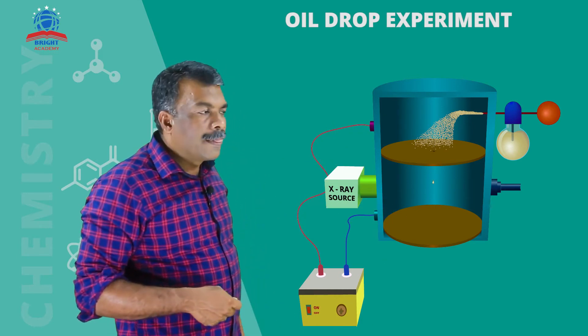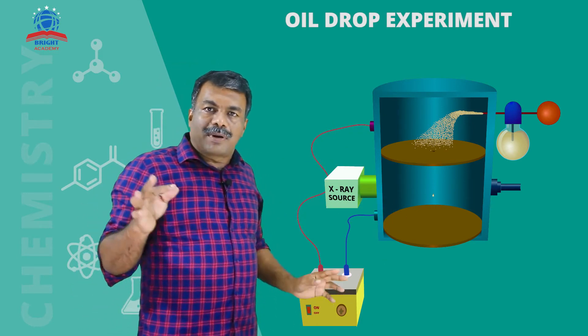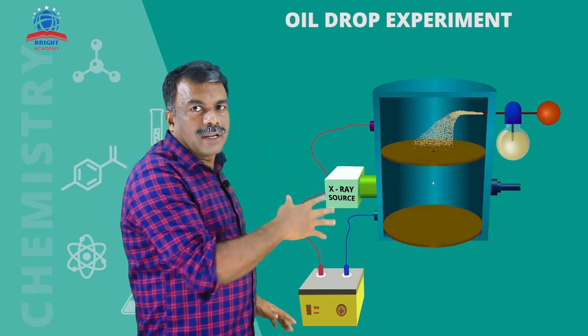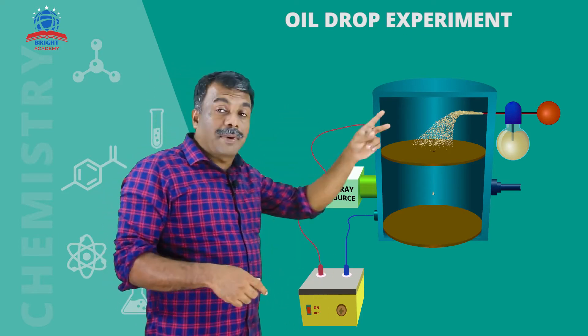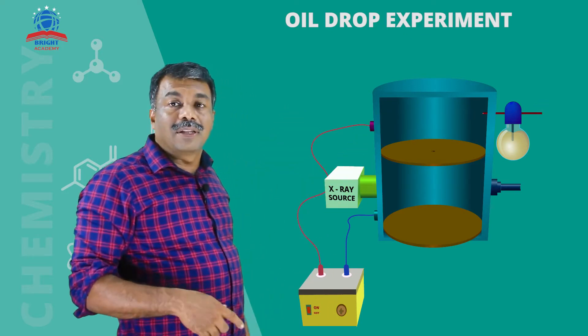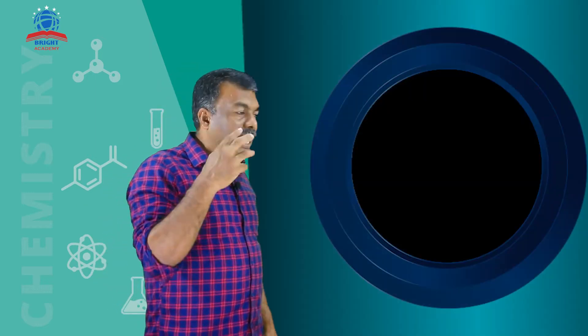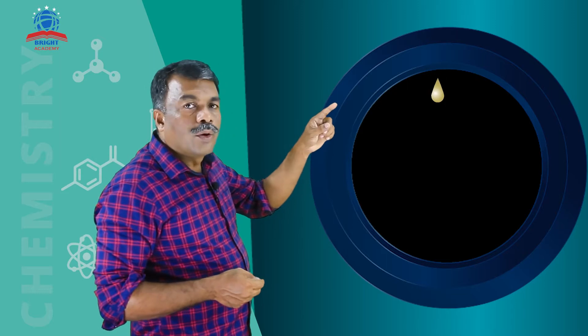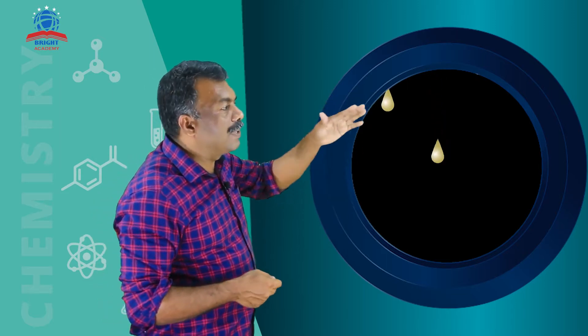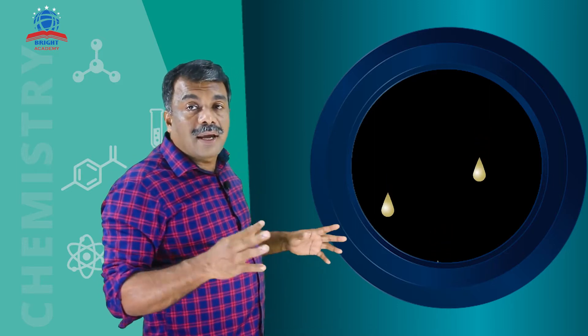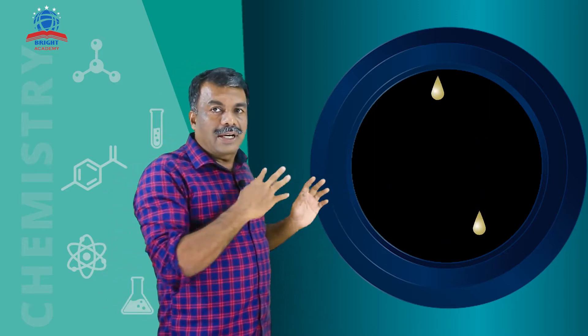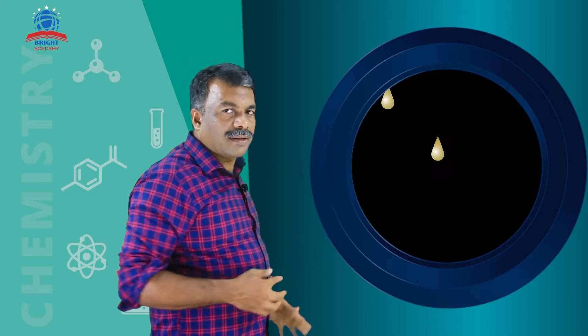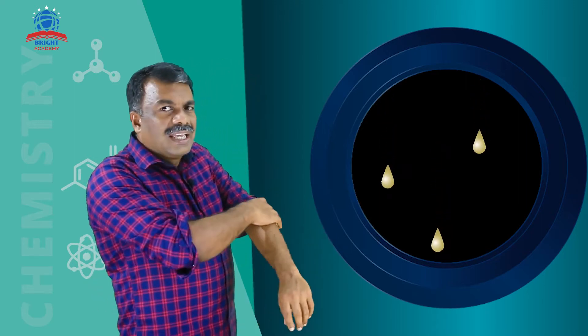Through the microscope, you can observe these oil droplets in between those two plates — in the middle of the plates. This is the experimental arrangement and working arrangement.